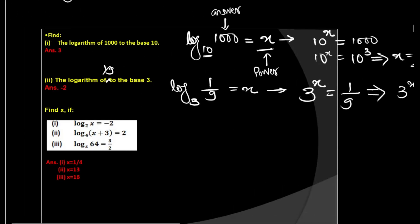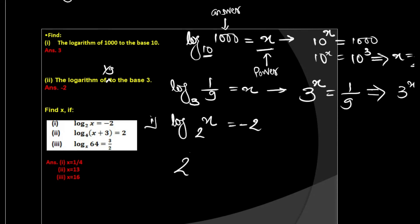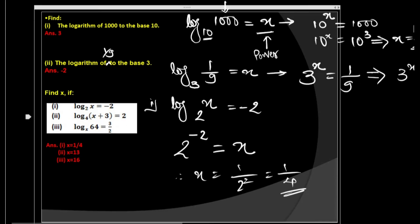Find x, question 1: log of x to the base 2 is equal to minus 2. Convert to exponential form — base 2, power minus 2, answer x. So x equals 1 over 2 squared, which is 1/4.